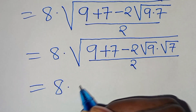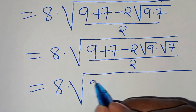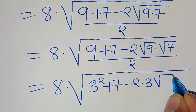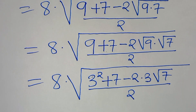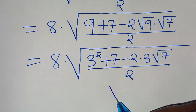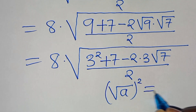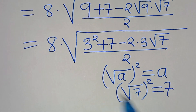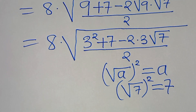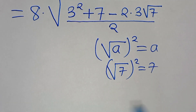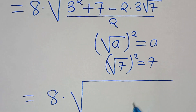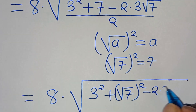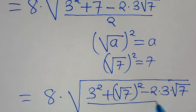The next step is that we can express 9 as 3 to the power of 2, so we have 8 multiplied by the square root of 3 squared plus 7 minus 2 multiplied by square root of 9, which is 3, multiplied by square root of 7, all divided by 2. Now we can substitute 7 with square root of 7 to the power of 2, so that we have 8 multiplied by the square root of 3 squared plus square root of 7 squared minus 2 times 3 times square root of 7, all divided by 2.